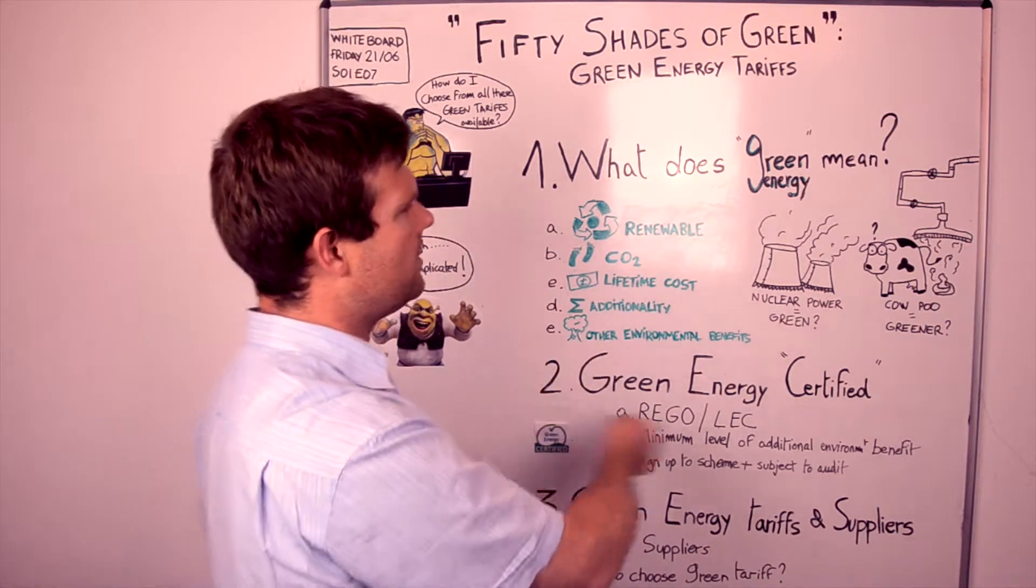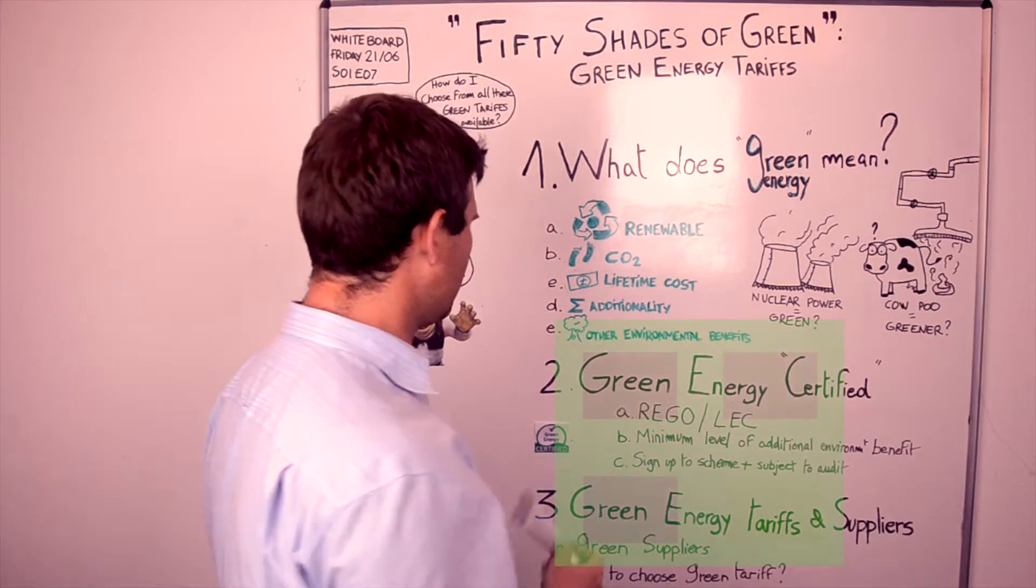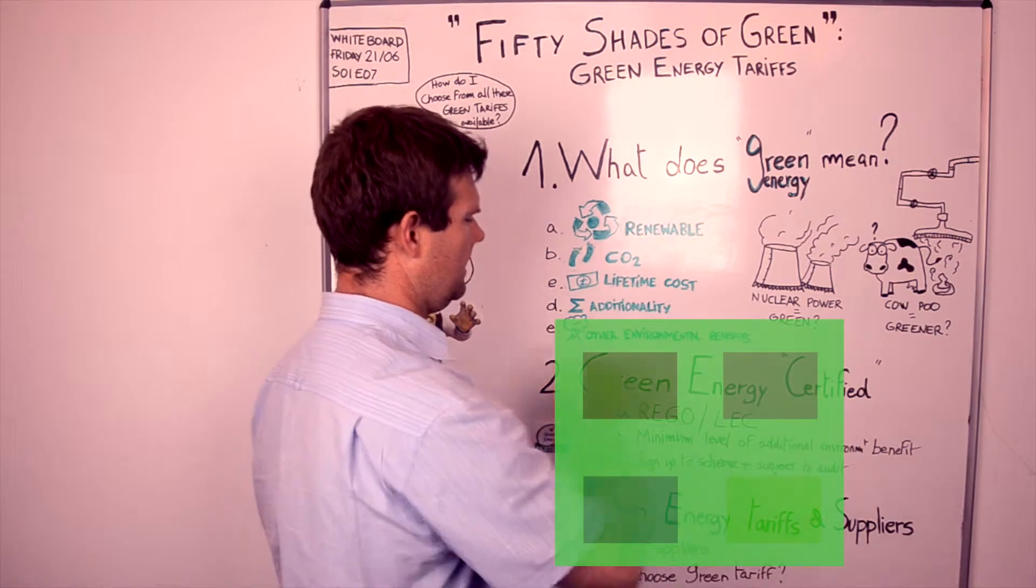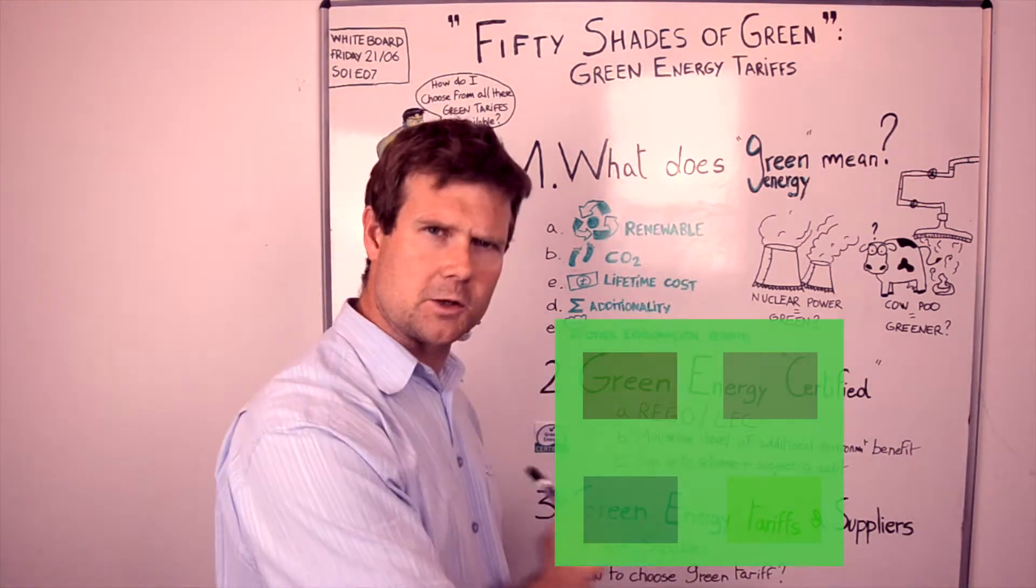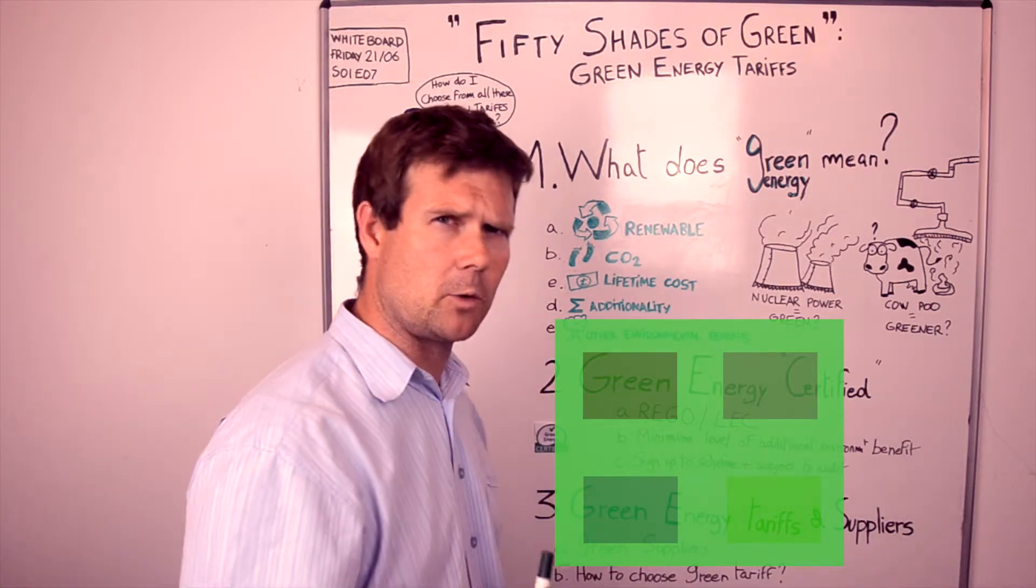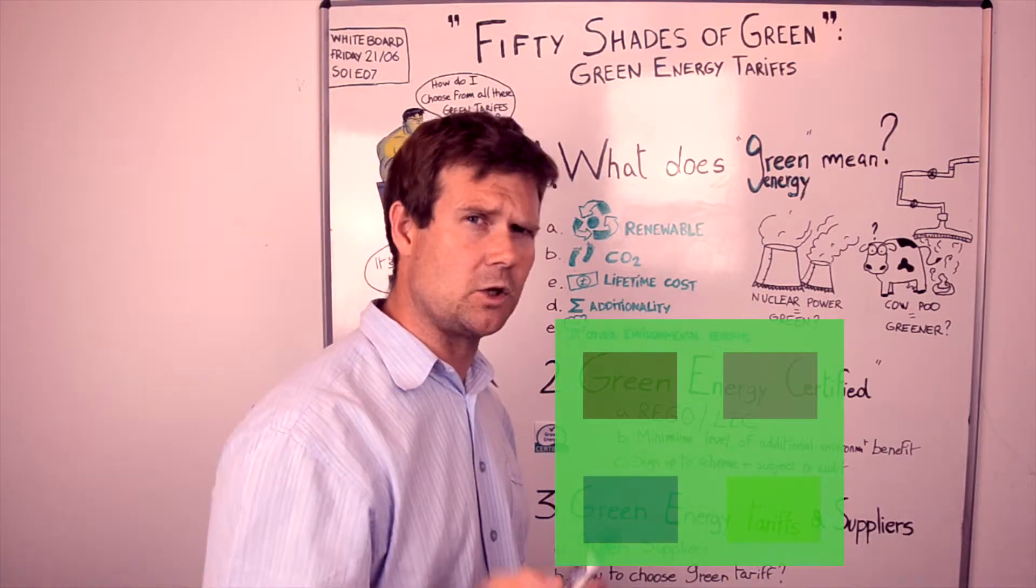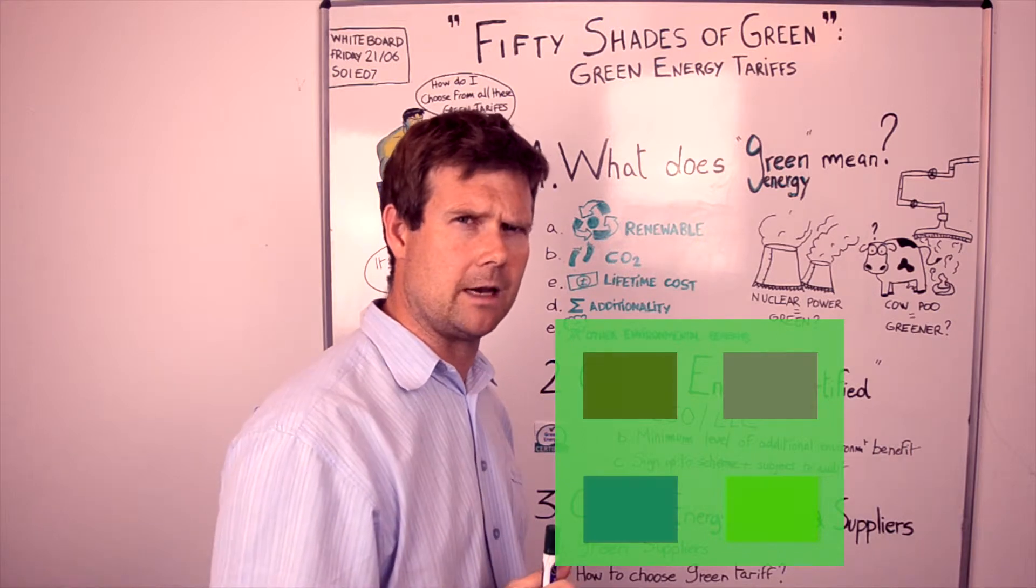So there are lots of things that make this subject particularly complicated. What you can look at from the point of view of a supplier is let's take this square here. We have one, two, three, four little squares underneath. They all look varying shades of green. This is effectively what a supplier does. These are all the green tariffs that they're offering you. They're offering this to you because you've expressed an interest in being ethical and trying to be greener than green.